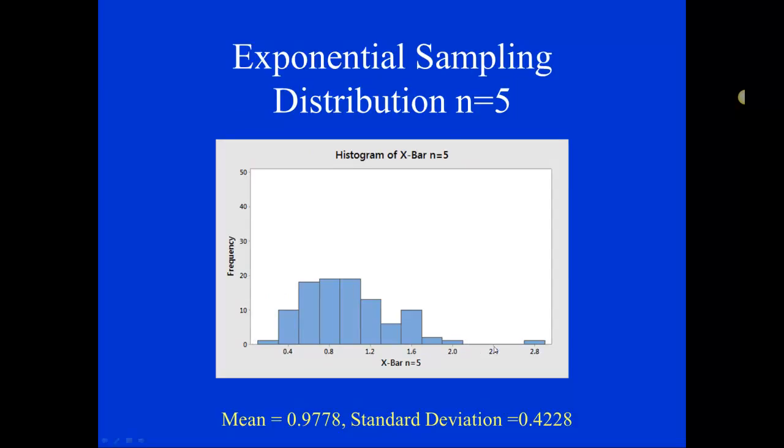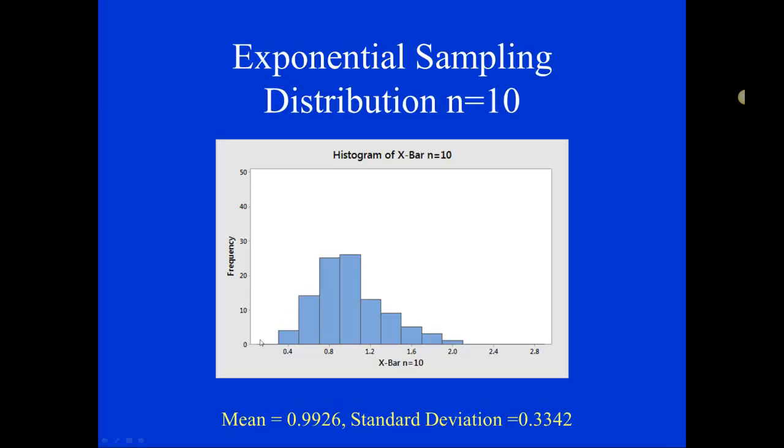When we took samples of size 10, then still skewed to the right, but a little bit less skewed. And when we get to samples of size 30, now we're not seeing very much skew anymore. Instead, we're starting to see a normal distribution.